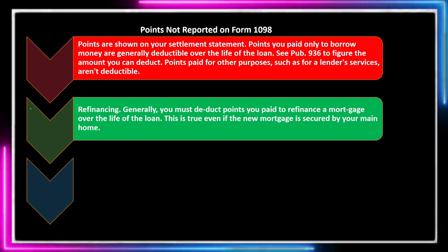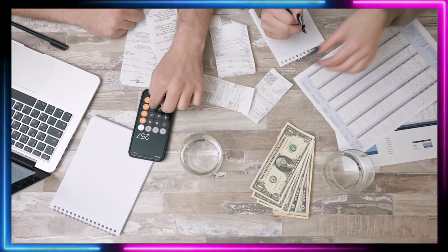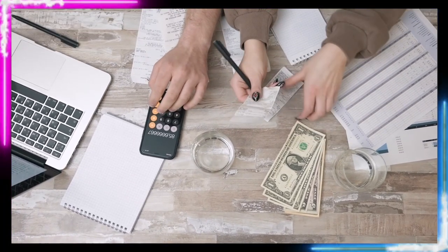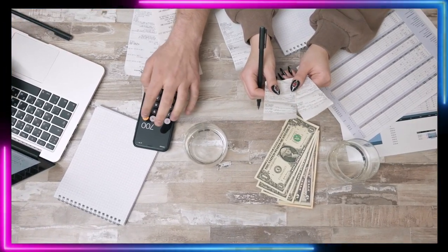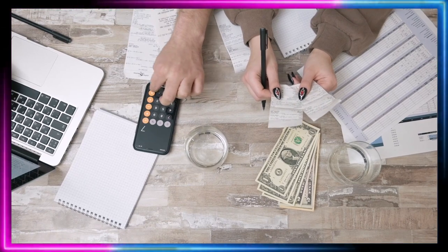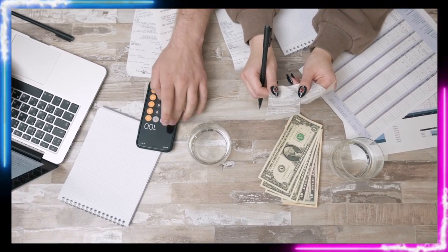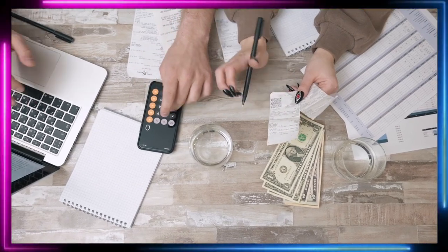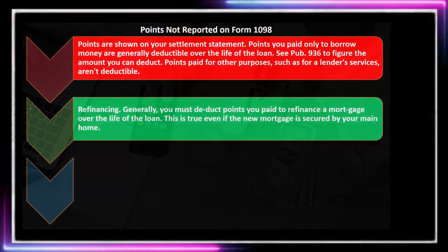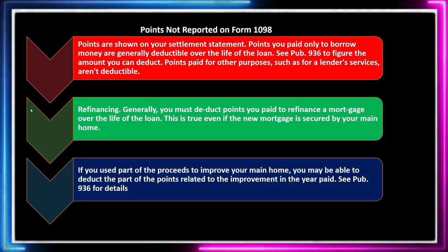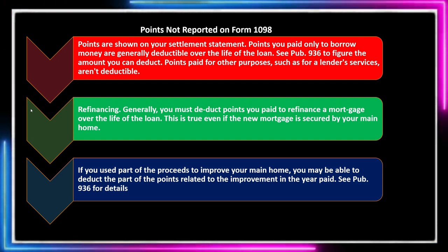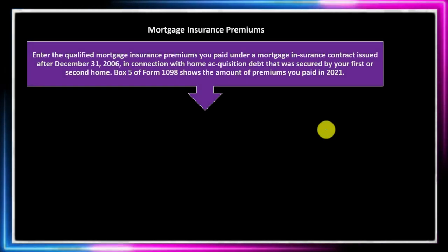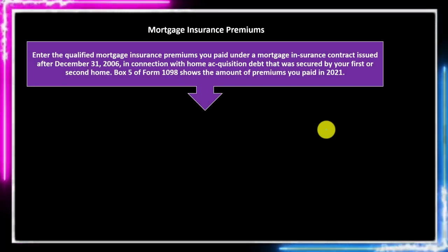For refinancing, you generally must deduct points you pay over the life of the loan. If points are categorized as such, you get the deduction, but you may have to allocate it over the life of the loan rather than taking it all at the time of payment — which could significantly reduce the current benefit, especially for a 30-year loan. However, if you use part of the proceeds to improve your main home, you may be able to deduct the portion of points related to the improvement in the year paid. See Publication 936 for details.